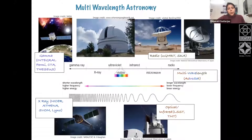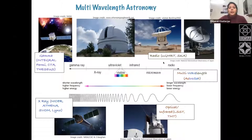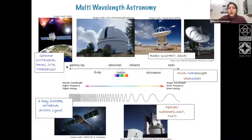Pulsars can be observed not only at radio frequencies but throughout the electromagnetic spectrum. We now have a vast array of ground-based and space-based telescopes which can observe pulses at microwave, infrared, visible, X-ray, and gamma-ray frequencies. Some of these are already active and some are planned missions.